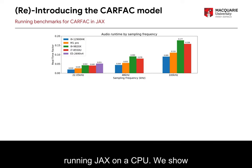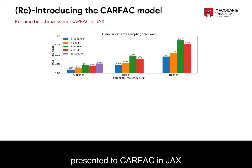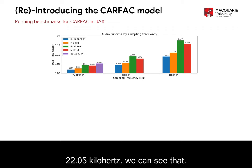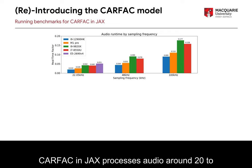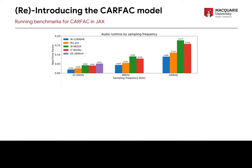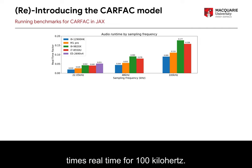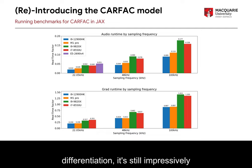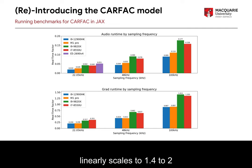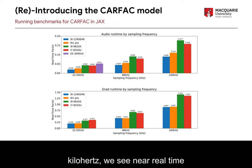To demonstrate the speed of CARFAC when running JAX on a CPU, we show here benchmarks for five different systems for audio presented to CARFAC in JAX, run at three different sampling frequencies. At 22.05 kHz, CARFAC in JAX processes audio around 20 to 50 times real-time. This linearly scales to 10 to 20 times real-time for 48 kHz, and again linearly scales to 5 to 10 times real-time for 100 kHz. Although much slower when performing differentiation, it is still impressively fast, with 3 to 5 differentiations performed per second at 22.05 kHz, scaling to 1.4 to 2 per second at 48 kHz, and near real-time performance of 0.7 to 1.1 differentiations per second at 100 kHz.